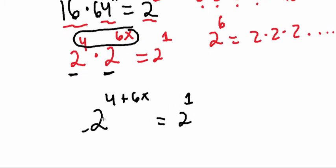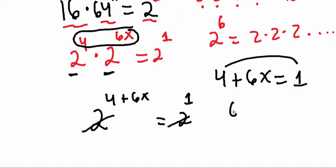Now I can eliminate my bases, and I can just say 4 plus 6x equals 1. And basically, you just solve for x. So I pass this to the other side. 6x equals 1 minus 4, or 6x equals negative 3.